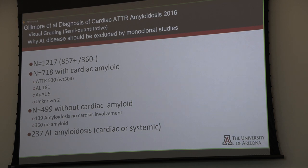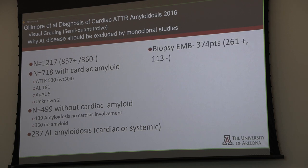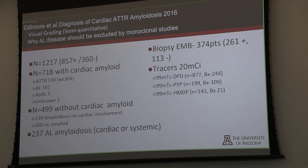A very large study of 1,200 patients — positive and negative — included 538 ATTR and 181 AL, plus other types. It's a valuable study because some had endomyocardial biopsy, and the rest had either other biopsies or clinical determination of the subtype. They used DPD, PYP, and HMDP. They only did planar imaging, which we will also discuss.